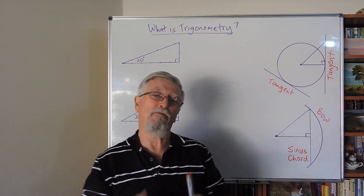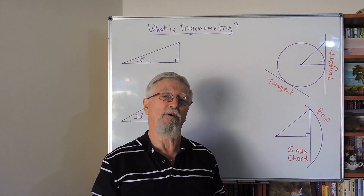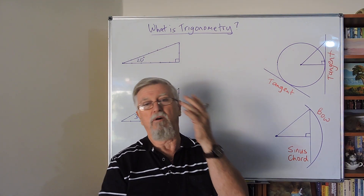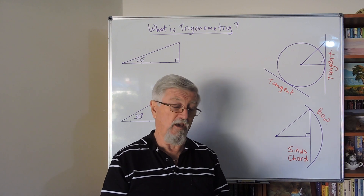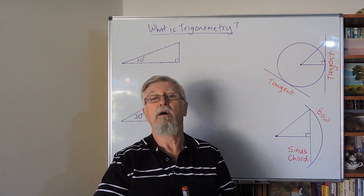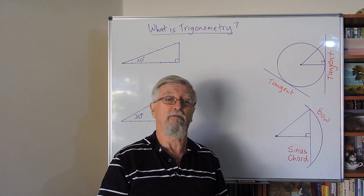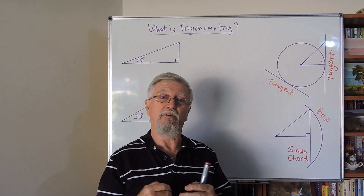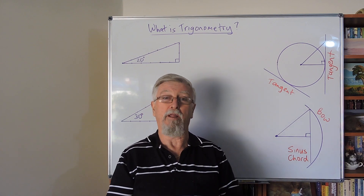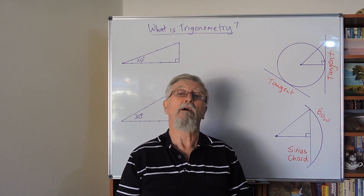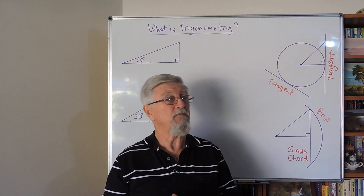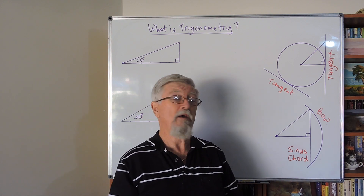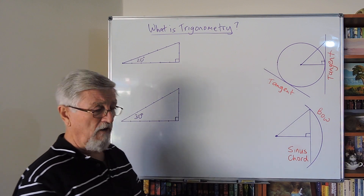Hi everyone. For well over 3,000 years people have been talking about right angle triangles — the sides, the angles, and things. You can go back to the Babylonians, back to Greek and Latin history, and people are talking about right angle triangles. So when we get to trigonometry, it's been around for a long time, an awful long time. So let's have a look at what's going on with triangles.